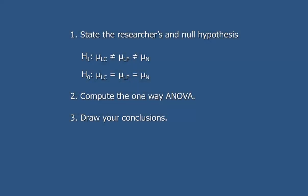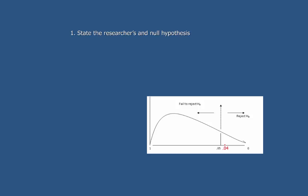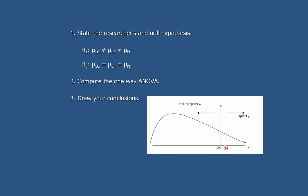Now that we've computed the one-way analysis of variance in SPSS, let's move on to step three: draw our conclusions. We write down the values from our ANOVA summary table — an F-score of 3.52 with 2 degrees of freedom in the numerator and 31 in the denominator, with an exact probability of .04, or 4%. We draw a positively skewed distribution representing probability from 100% down to 0% that the effect is due to random variation, then mark off our rejection region using alpha = .05.